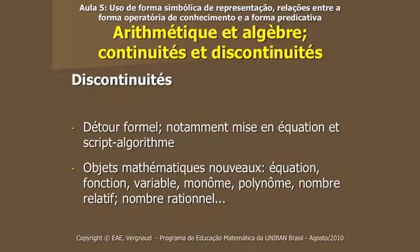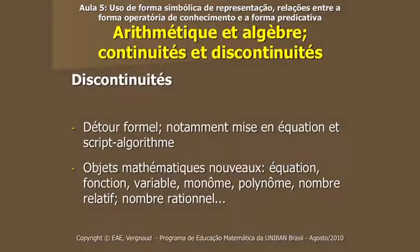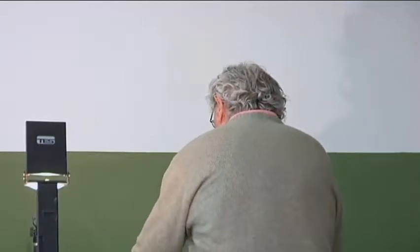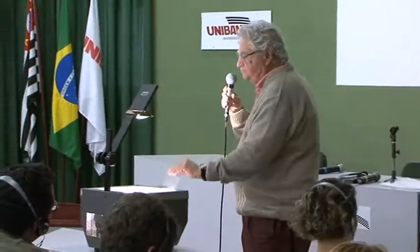Há objetos matemáticos novos na álgebra. Do ponto de vista do objeto, há coisas novas: o conceito de equação, o conceito de função variável, de polinômios, números relativos, números racionais. No ensino fundamental não se fala de números racionais relativos como se fala no ensino médio. Vamos introduzir objetos matemáticos novos que podem criar problemas de aprendizagem para muitas crianças. Queria, em primeiro lugar, dar um exemplo de script-algoritmo.